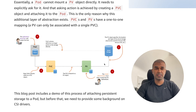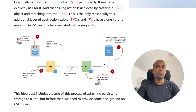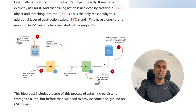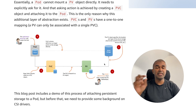How can the pod attain storage that is permanent? Firstly, we need to create storage in AWS — it could be EFS or EBS. EFS, Elastic File System, is generally used for multi-read and multi-write. EBS, Elastic Block Store, is generally used for read-write once, meaning only one pod can write. With EFS, multiple pods can write at the same time.